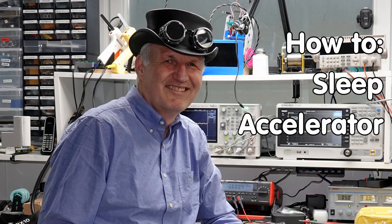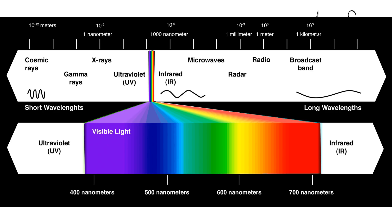Greetings YouTubers, here is the guy with a Swiss accent, with a new episode and fresh ideas around sensors and microcontrollers. White light contains many different colors from red to blue, also called rainbow colors.